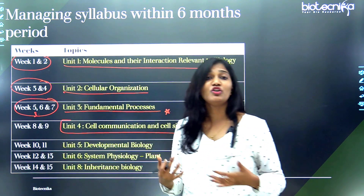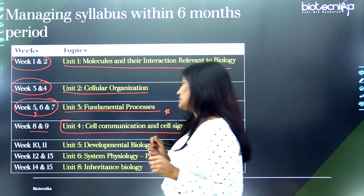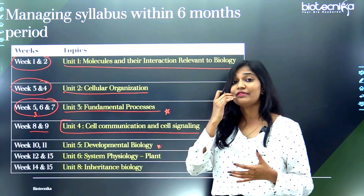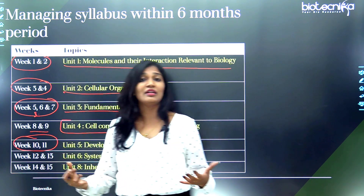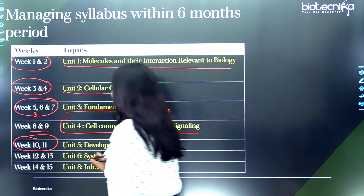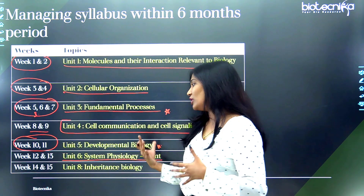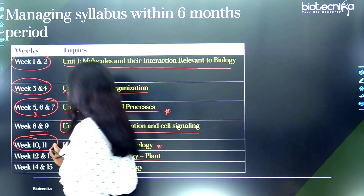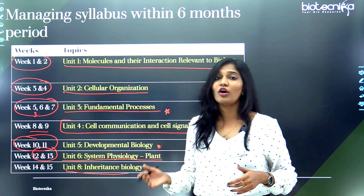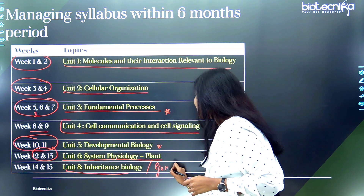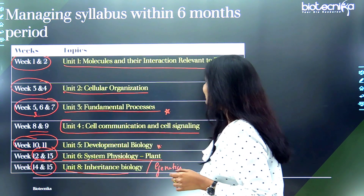The next unit is cell communication and cell signaling — spend almost two weeks on this chapter. Then comes developmental biology, an elaborate unit; spend two weeks on it, which I've given as week ten and week eleven. Next is system physiology — plant physiology — covering photosynthesis, respiration, and hormones: week twelve and week thirteen. After that is inheritance biology, also called genetics — week fourteen and week fifteen.